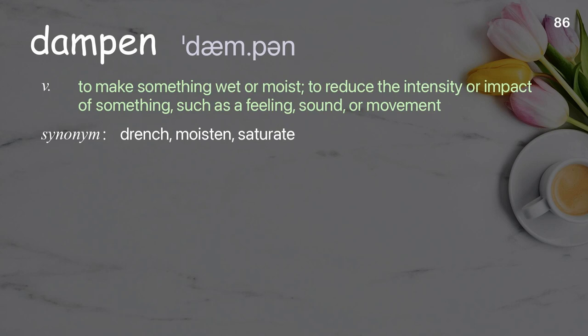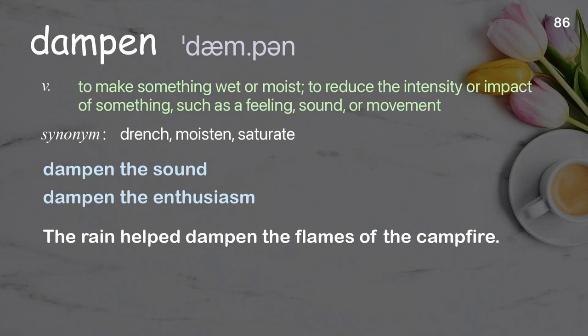Dampen: to make something wet or moist; to reduce the intensity or impact of something such as a feeling, sound, or movement. Examples: dampen the sound, dampen the enthusiasm. The rain helps dampen the flames of the campfire.